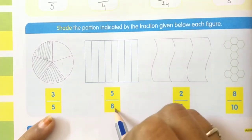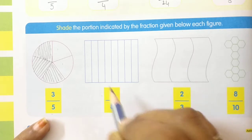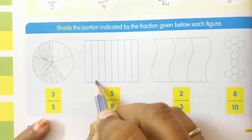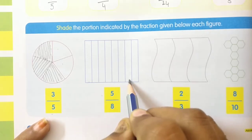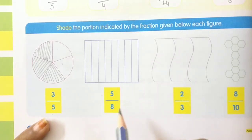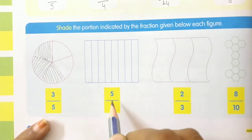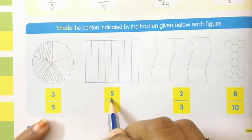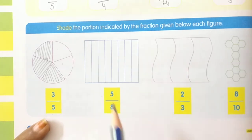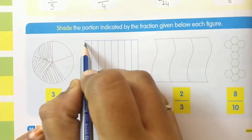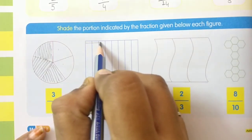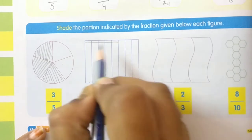How many parts do you have? Total eight parts — one, two, three, four, five, six, seven, eight. How many parts do I have to shade? Five parts. So now shade five parts children.